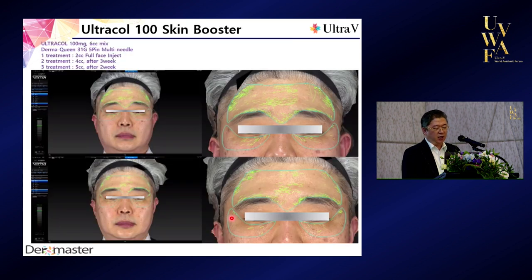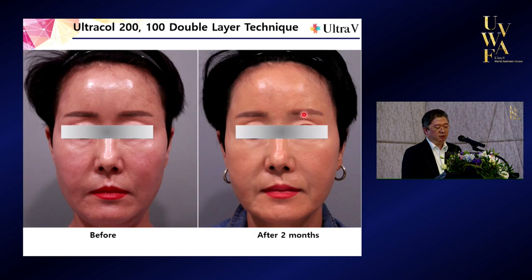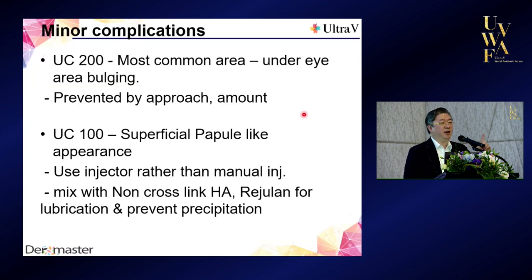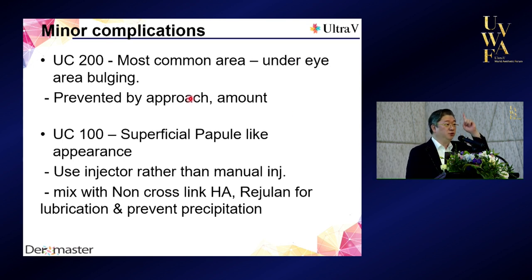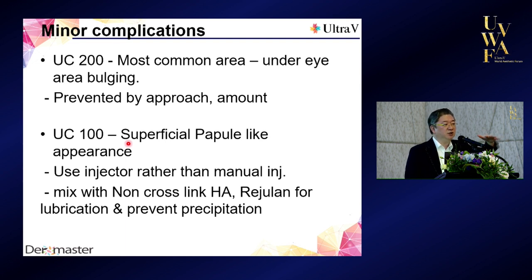We can use UltraCol for a lot of wrinkles as a skin booster, for skin pores, and acne scars — many indications. Just one thing: be careful under the eye area. Don't shoot more than 0.5 cc right under the eye. Also, approach from low to up for prevention. And another thing with UltraCol 100 — if you inject too superficially, you might have something nodule-like. When that happens, please don't inject triamcinolone alone and don't inject hyaluronidase. Why? Because this injection will make things worse — the surroundings will become sunken, but the UltraCol 100 embossment will not go away. What you can do is — because it's hydrophilic — inject non-cross-linked hyaluronic acid.